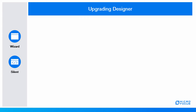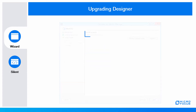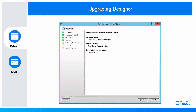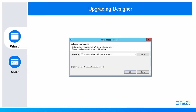You can upgrade Designer using the wizard or in silent mode. Using the wizard: launch the Designer installation program from Identity Manager media, login as an administrator to the server where Designer is installed, specify the older Designer version path, review the pre-installation summary before installing the new version of Designer, and select the workspace where your Designer projects are saved. To make this workspace the default, check the checkbox.